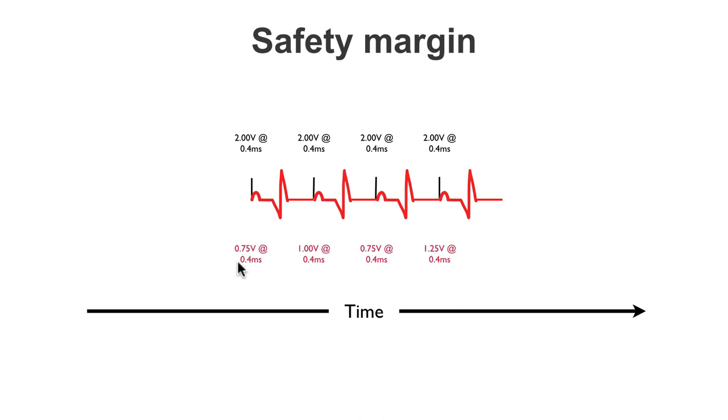So, on here, I've made these numbers up. They're hypothetical values for the minimum amount of energy required to trigger a depolarization in the atria over time. And we can see, actually, that in the real world, the threshold does fluctuate. It's 0.7 volts at 0.4 milliseconds here. Then it might go up to 1 volt at 0.4 milliseconds. Down again to 0.75 volts at 0.4 milliseconds. And even as high as 1.25 volts at 0.4 milliseconds.